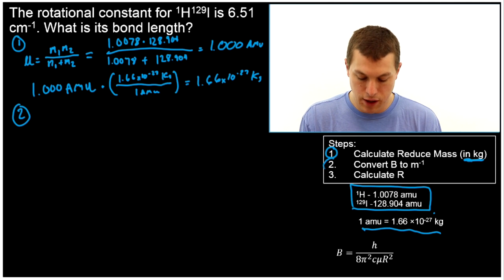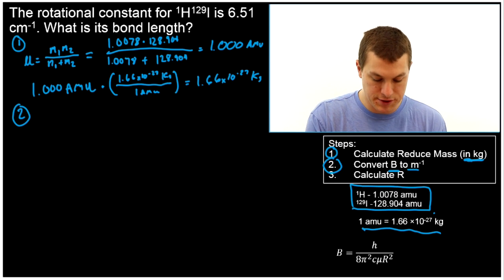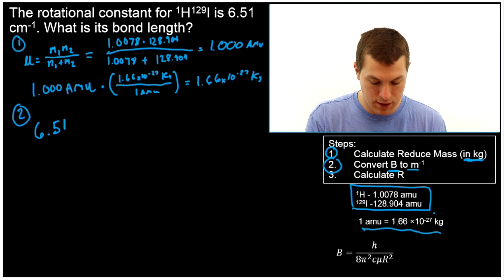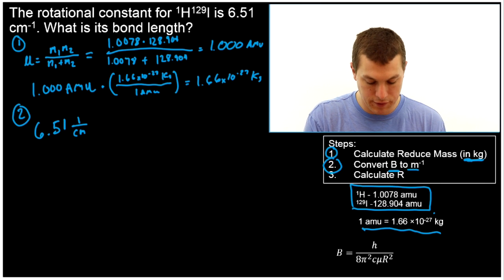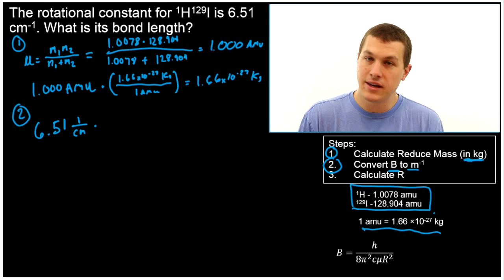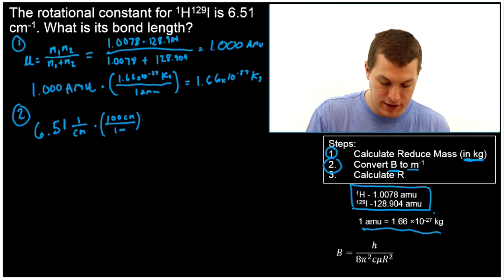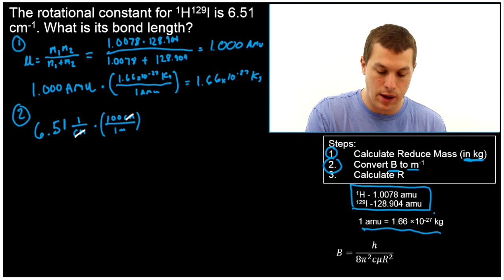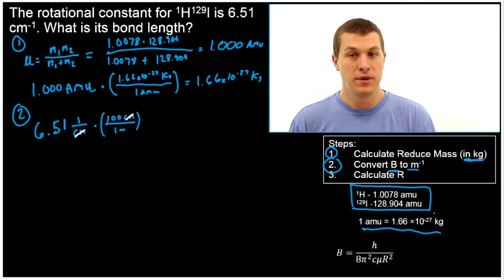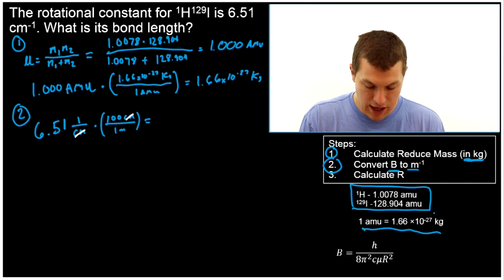Step two says convert our rotational constant B into per meters. So right now notice that it's per centimeters. So 6.51, 1 over centimeters. And this tricks a lot of people up because you're so used to doing conversions between centimeters and meters that you just say, hey, all I need to do is divide by 100. But because it's per centimeters, that means that I need to write 100 centimeters up top and one meter on the bottom. That's going to make my centimeters cancel out. But notice now I'm multiplying by 100 instead of dividing by 100 because it's per centimeters, not centimeters. Those are different units.